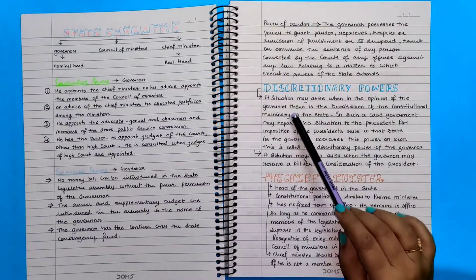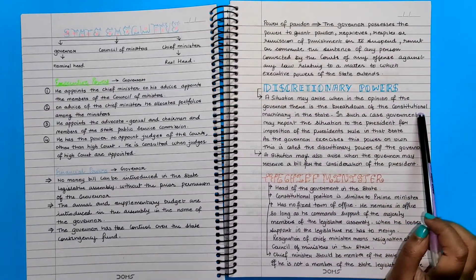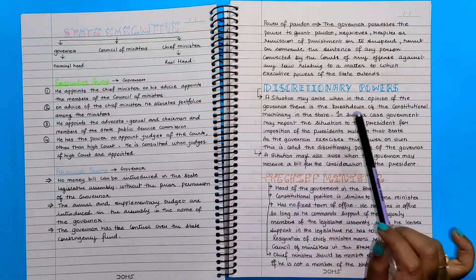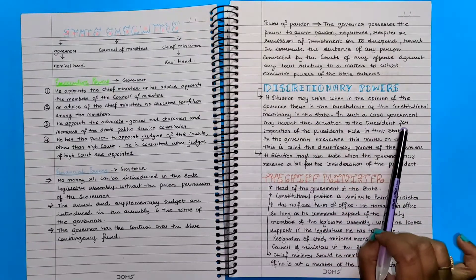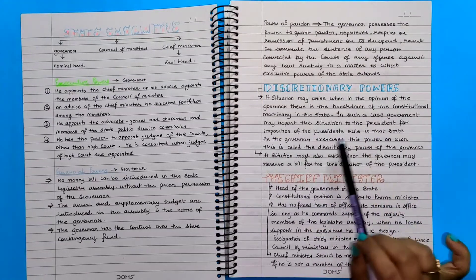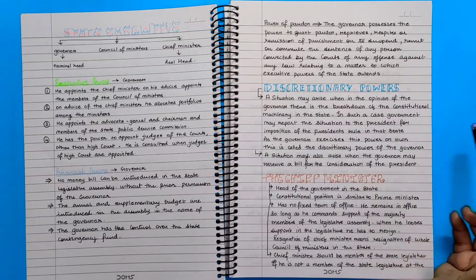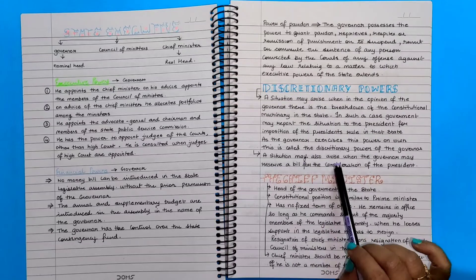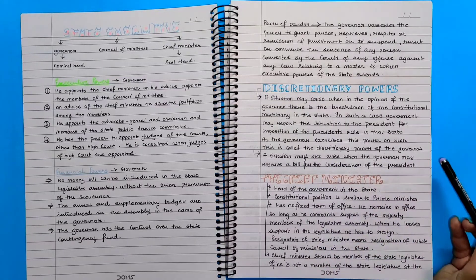Discretionary powers: A situation may arise when in the opinion of the governor, there is the breakdown of the constitutional machinery in the state. In such a case, government may report the situation to the president for imposition of president rule in the state. As the governor exercises this power on his own, this is called the discretionary power of the governor. A situation may also arise when the governor may reserve a bill for the consideration of the president.